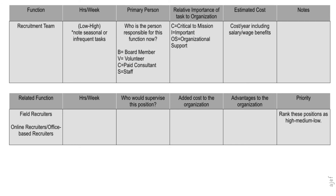The first column is intended for positions or groups of positions to be established. Next, you have to determine how many hours will be used to manage the recruitment functions in a week, put it in a sequence as low or high, and classify it as seasonal or infrequent task. The third column is about the primary person responsible for overseeing the position. The fourth column is to categorize whether the position is under critical, important, or organizational support. The estimated cost is the computation of the position that may incur in a whole year. A column for remarks is also provided in the sixth column for notes and reminders. It is also a must to determine other functions related to the positions being analyzed, which allows the evaluator to understand whether existing positions are available in the organization so repetition can be prevented.